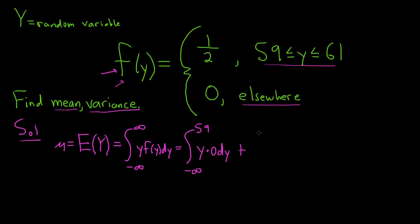We'll go from negative infinity to 59, and for these y values, f of y is equal to 0, so we get y times 0 dy. Then from 59 to 61, we have y f of y. In this case, f of y is equal to 1 half, so times 1 half dy. Then we're going from 61 to infinity, y times 0 dy, because it's 0 everywhere else. The only time it's not 0 is when y is between 59 and 61.